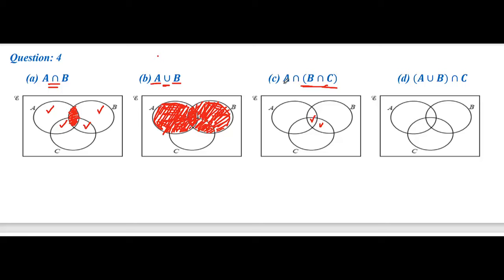Now we have to identify A. This region belongs to A, this region also belongs to A, this region also belongs to A, and this region also belongs to A. We have identified A and B intersection C as a whole. There is intersection between these two sets, so we shade only where double ticks are involved. This is the double tick area, so we shade only this area — this is the desired region and our final answer.